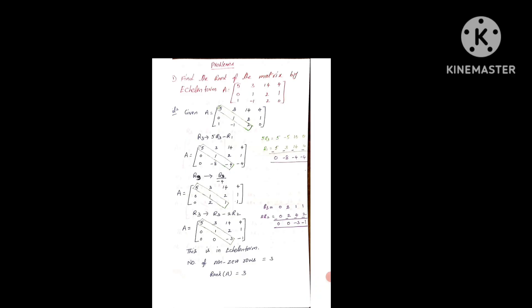See here — the principal diagonal elements, and below them all zeros are present. This is the upper triangular matrix and this is in Echelon Form. Number of non-zero rows: 1, 2, 3. Number of non-zero rows is 3, so the rank of the matrix is 3.